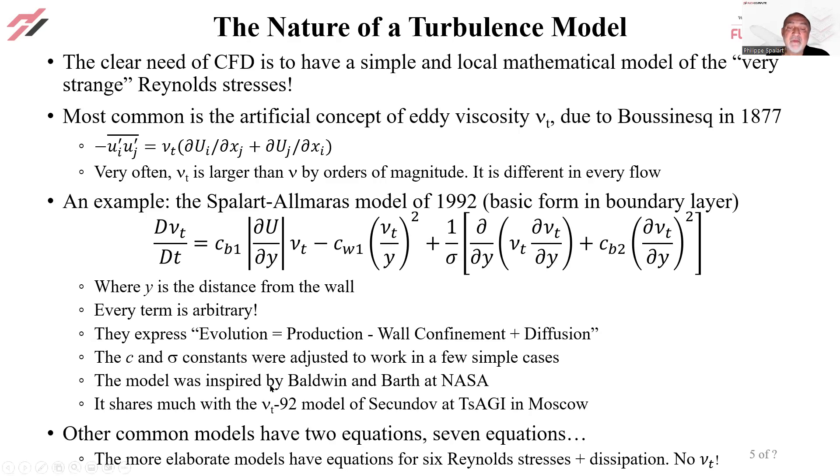The idea of going to a one-equation model goes to Baldwin and Barth at NASA in the late eighties. The SA model wouldn't exist without them. And then I found that it had much in common with the Russian model of Secundov called νt-92 that nobody knew about in the West.